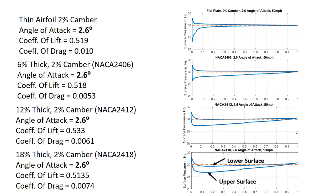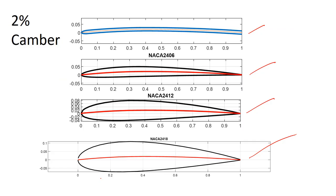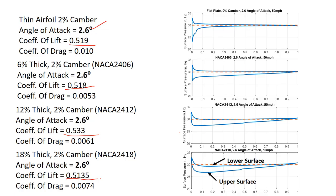So there's the results from X foil, 2.6 degree angle of attack, 0.519 coefficient of lift, 0.518, 0.533, 0.5135. They're all within 4%. The lift is virtually identical for all four of those airfoils at the same angle of attack. Were you expecting that? I suspect not.